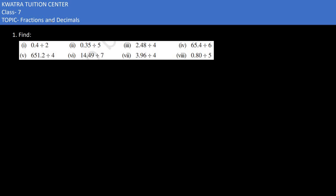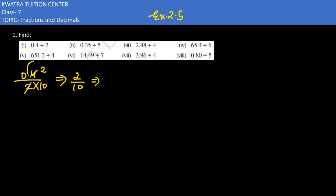In the first one of exercise 2.5, it says find 0.4 divided by 2. Here we have 0.4 and 2. First, remove the decimal — you have to put 10 in the denominator because of one decimal place. 4 and 2 will cancel, giving us 2 by 10. To simplify 2 by 10, we know there will be one decimal place, so the answer is 0.2.